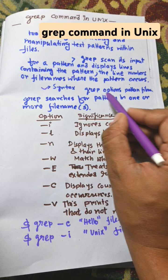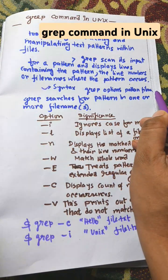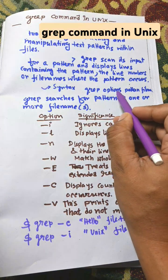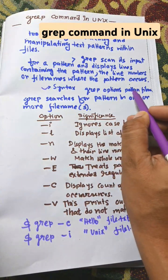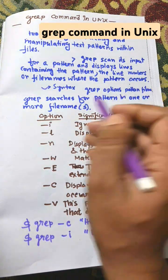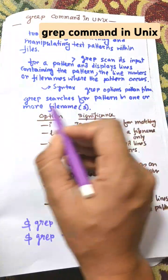Syntax is GRIP options pattern filename. These are the optional values. There are many options and patterns you can use, write the pattern, and the filename where you want to search. GRIP searches for patterns in one or more filenames.